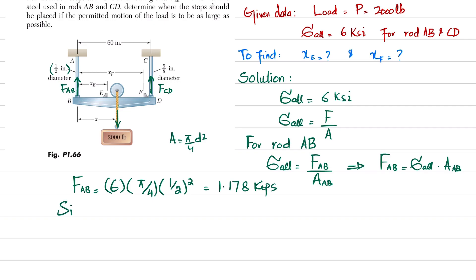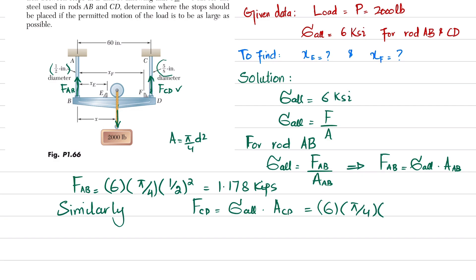Similarly, F_CD equals allowable stress times area of CD. The allowable stress is 6 KSI and the area of rod CD is pi/4 times (5/8)^2. When you solve this, F_CD comes out to be 1.84 kips. Now you have both F_AB and F_CD, and you need to find the distances x_E and x_F so that the load can be moved as far as possible.